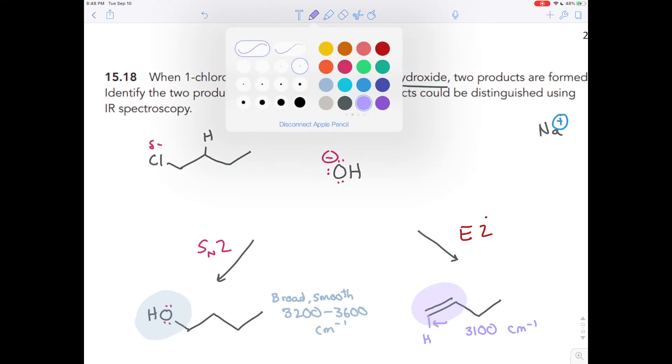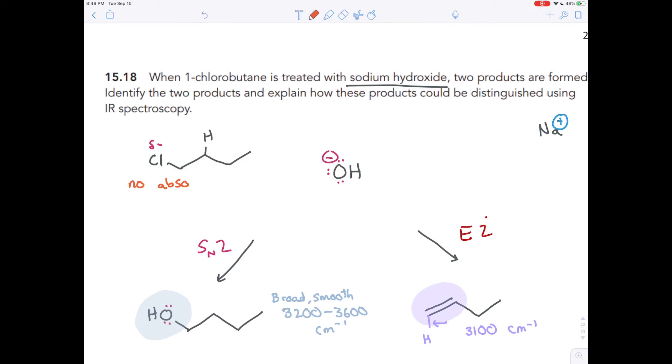And so if you compare both of those with your reagents, this has no absorption or no shadow, if you prefer, anywhere between 3,200 and 3,600 wavenumbers. And that includes 3,100, of course.